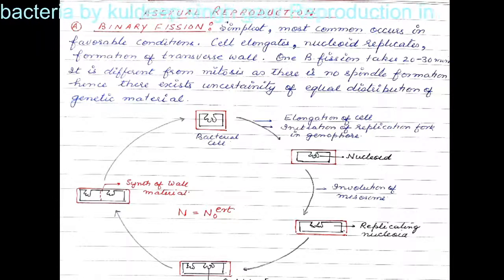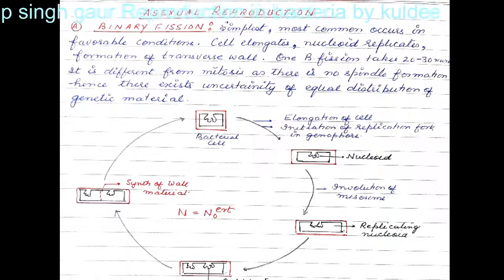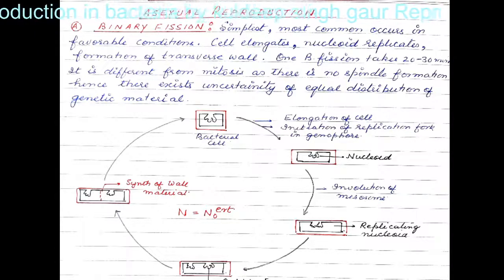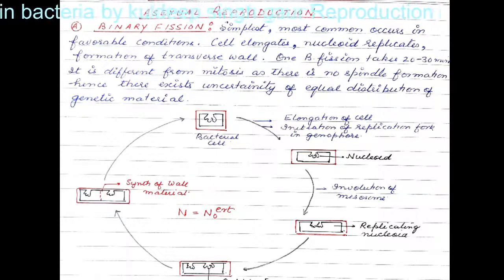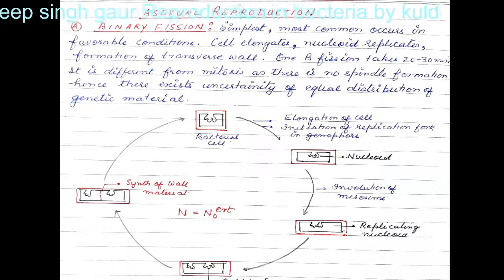So this is how binary fission is accomplished. The bacterial cell first gets elongated, then the nucleoid gets replicated, and when the two nucleoids come into existence they are distributed in the daughter cells. One thing to note is that this is slightly different from mitosis because there is no spindle formation. When no spindle is formed, there remains uncertainty in the equal distribution of the genetic material. In cell division, the equal distribution of chromosomes in daughter cells was ensured by spindle formation.